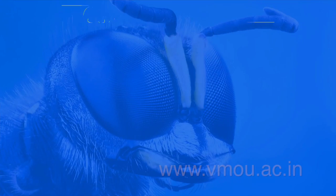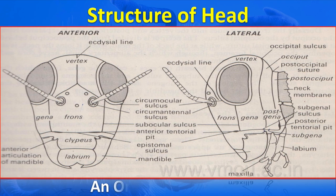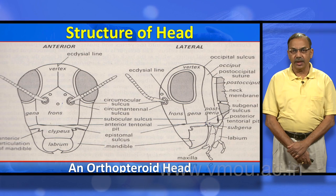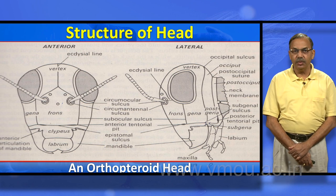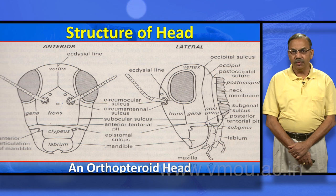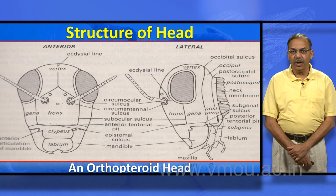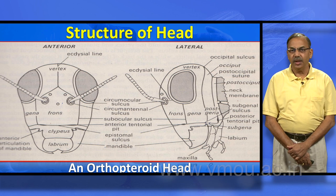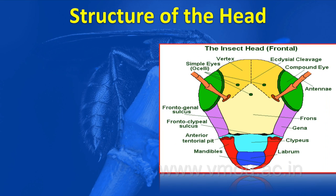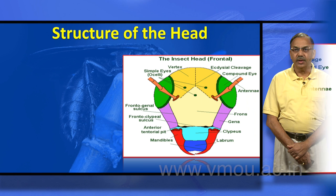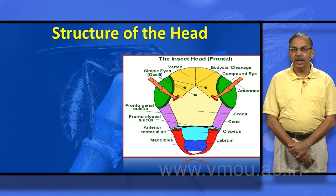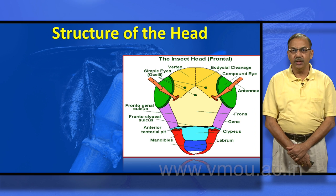For an orthopteroid head — a distinct hypognathous head — if you see it from dorsal to ventral side, on the topmost side there is an adfrontal line. An inverted Y-shaped frontal suture below surrounds the frons. From the eye there are sulci of the gena, following up to the epistomal sulcus, and the labrum and clipeal plates follow on the ventral side. Note that in some diagrams, the adfrontal line does not touch the antennal socket.